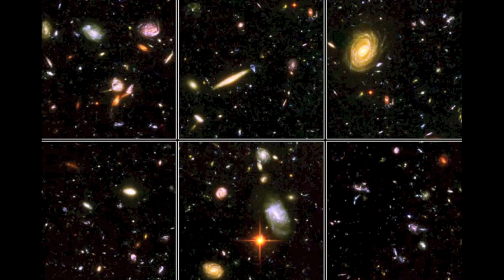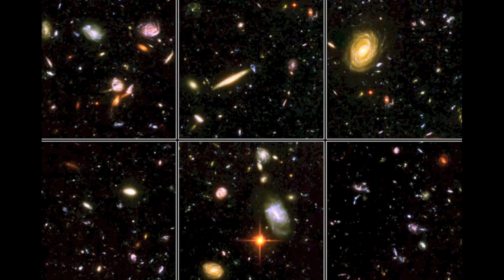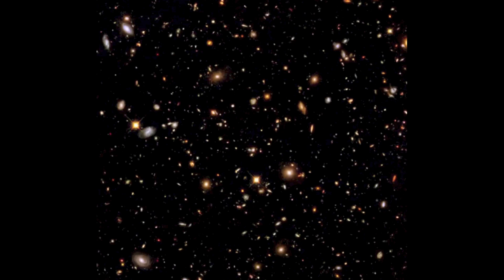Zooming in, we see spiral galaxies top-down and edge-on, elliptical galaxies, a wide variety of shapes and colors. This next image is called the Hubble Ultra Deep Field — an even deeper, longer-exposure view of another tiny portion of the sky. Nearly everything here is a galaxy as well, and we're looking at many thousands of galaxies that are 9, 10, or even more billion light years away.